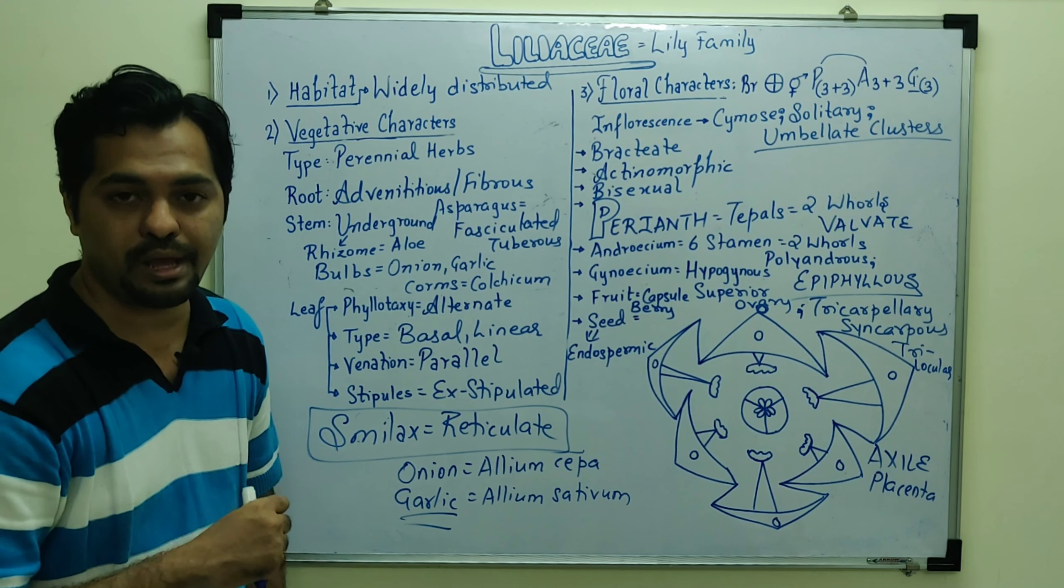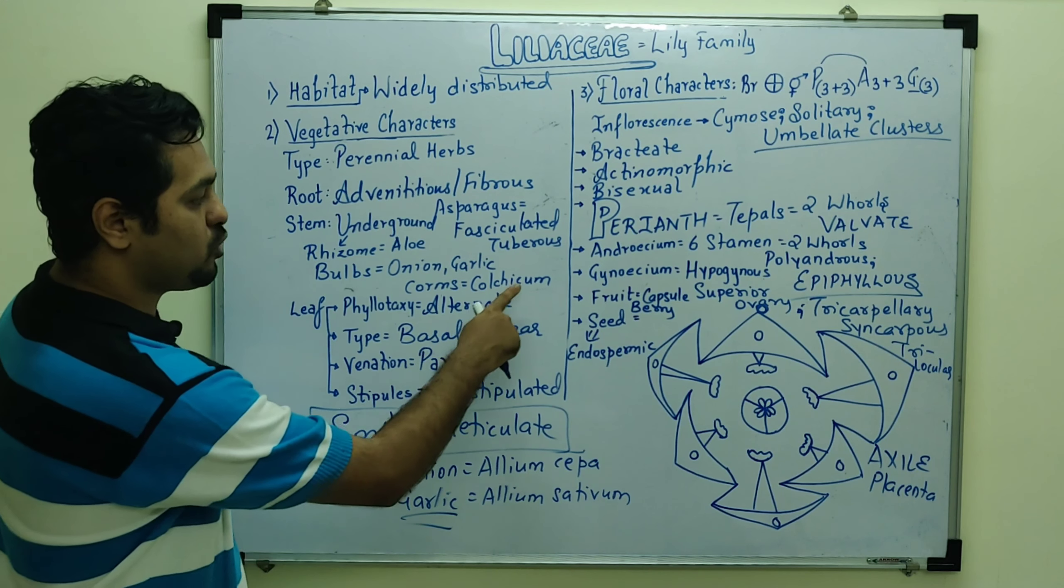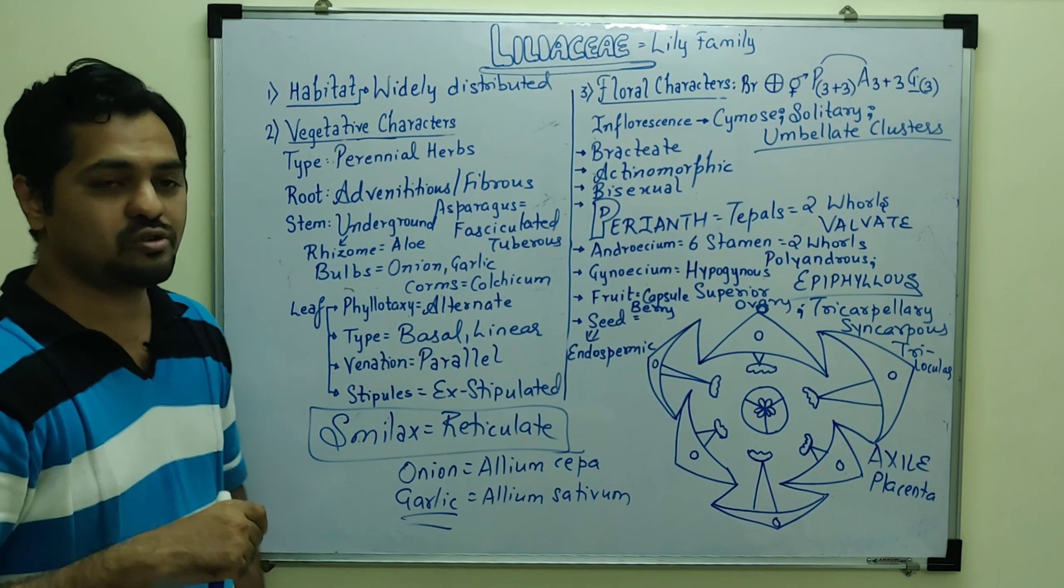Allium cepa, Allium sativum, onion and garlic both have medicinal properties. They are used in treatment of heart diseases, rheumatism. So garlic has important uses.